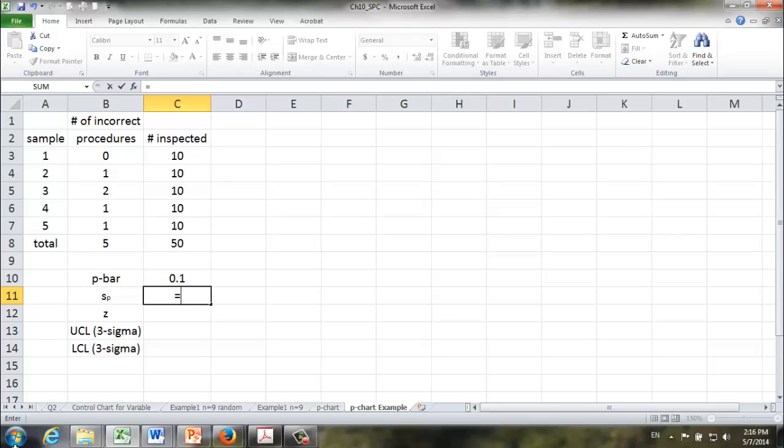The standard deviation of p-bar is given by sqrt(p-bar times 1 minus p-bar divided by sample size). In this case, it's 10. So sp is about 9.5%. The z-score depends on the level of confidence we want to have. The most useful one is 99.73% confidence interval. The corresponding z will be 3. So we are going to look for 3 sigma upper and lower control limits, or 99.73% upper and lower control limits.